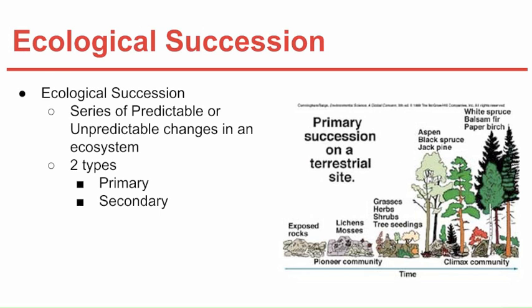Ecological succession is defined as a series of predictable or unpredictable changes in an ecosystem. Because ecosystems are constantly changing in response to natural and human disturbances, older inhabitants gradually die out because they're unable to adapt to the changes, causing new organisms to move in, which then causes further changes. This whole process is known as ecological succession, and there are two main types: primary succession and secondary succession.